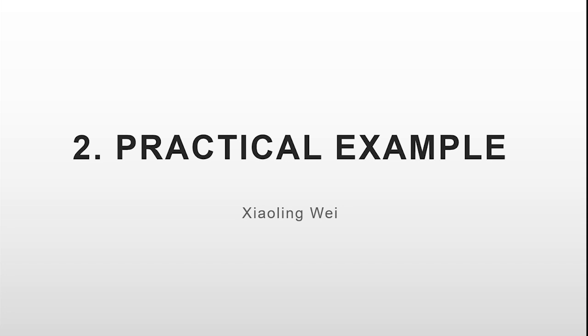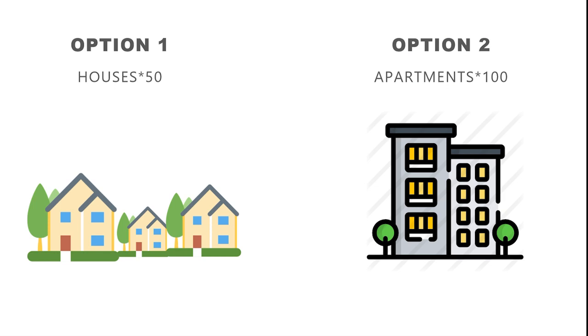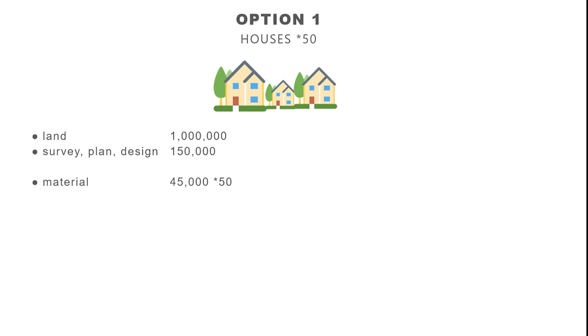Thanks for the conceptual explanation. I will now introduce a practical example of CBA and CEA in the decision-making process. There are two options for a new real estate project. Option one is to construct 50 single-family houses, and option two is to build apartments available for 100 families with comparatively smaller floor area. In option one, costs include the land price of €1 million, surveying, planning, and designing for €150,000, and construction costs including architectural materials, transportation of materials and machines, and labor.